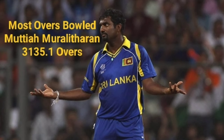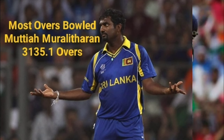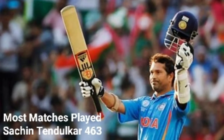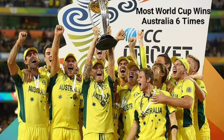Most overs bowled: Muttiah Muralitharan of Sri Lanka bowled 3,135.1 overs in 350 matches. Most matches played: Sachin Tendulkar of India played 463 matches. Most World Cup winners: Australia won the World Cup six times — in 1987, 1999, 2003, 2007, 2015, and 2023.